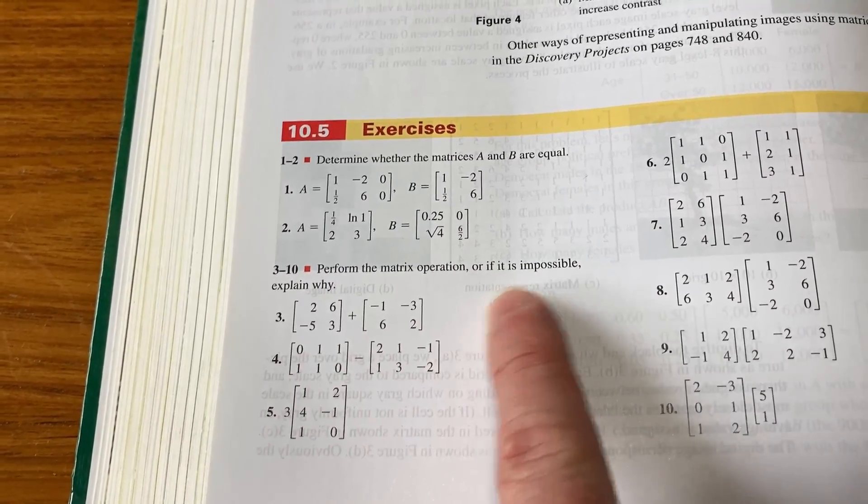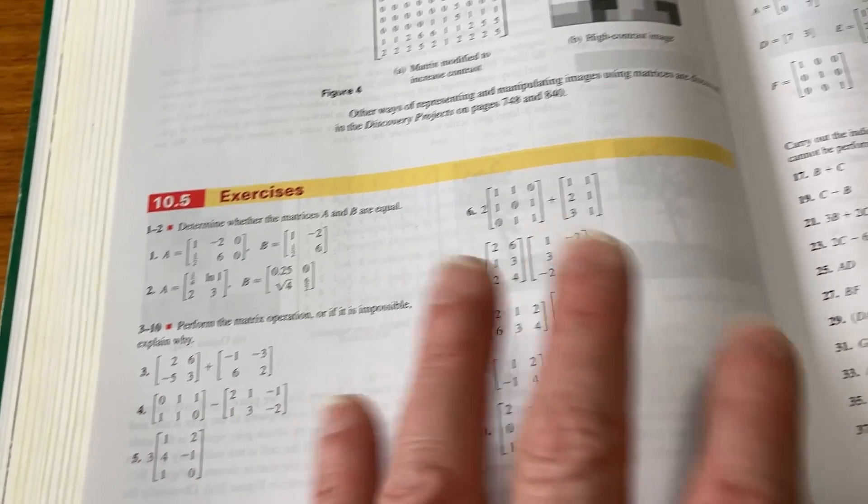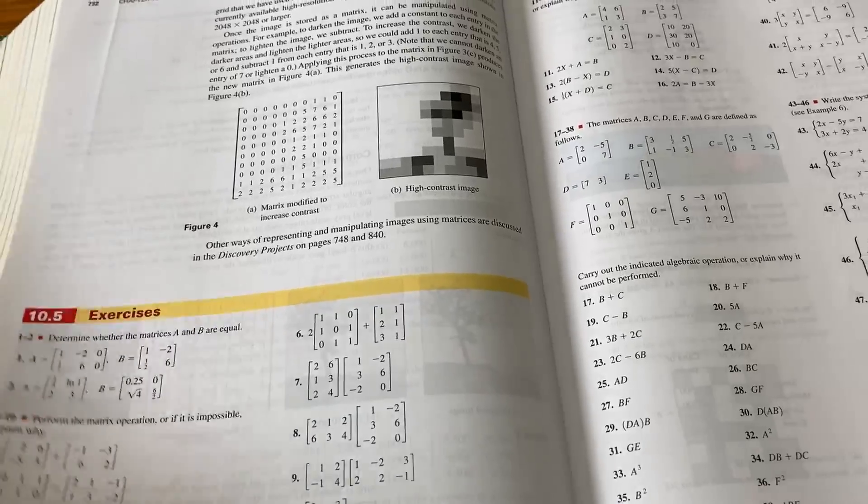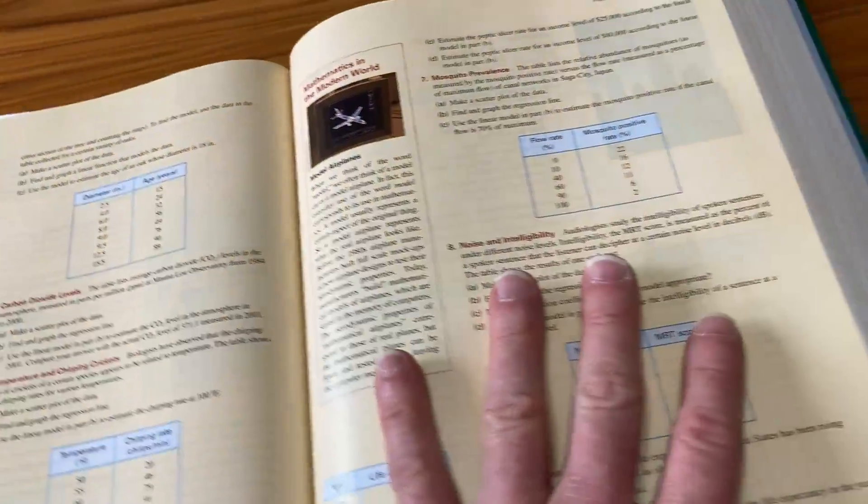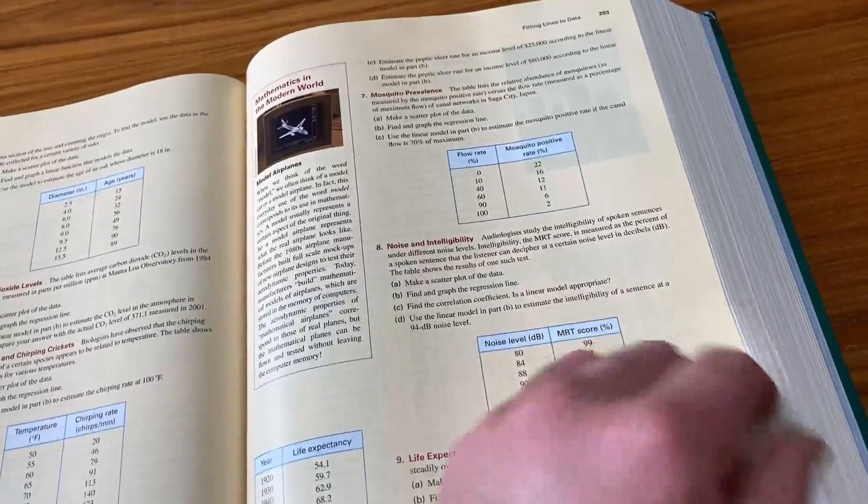Perform the matrix operation, or if it is impossible, explain why. So you can learn to add matrices, subtract them, multiply them if possible, etc. You can learn all kinds of math with one of these books. And again, they're really not that expensive if you're not picky about the edition and the author.